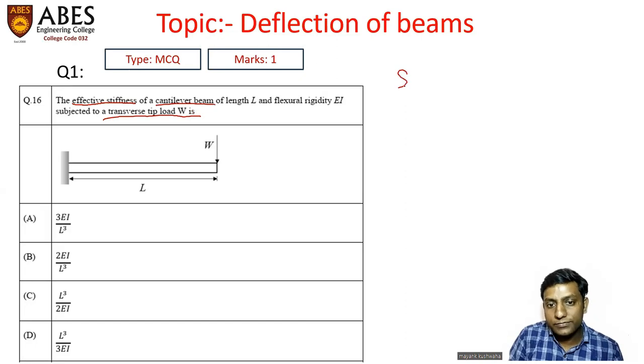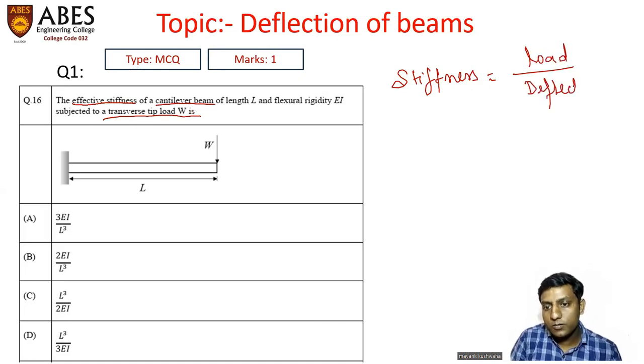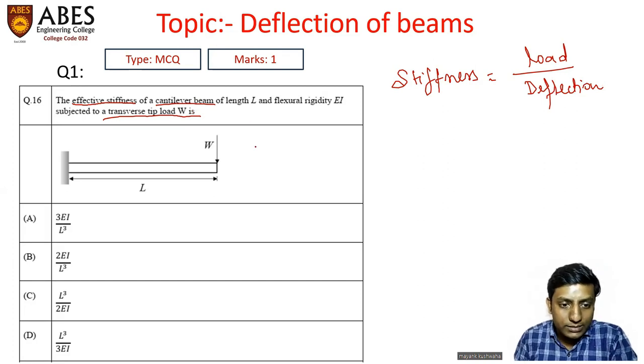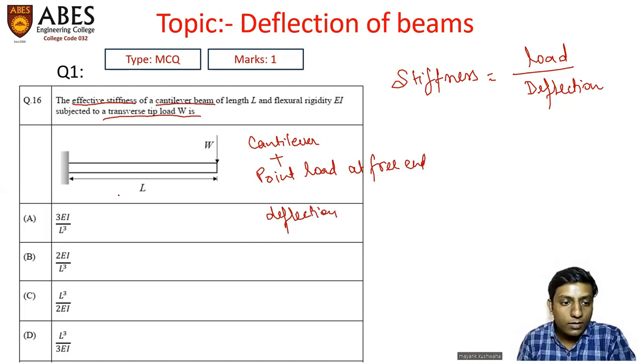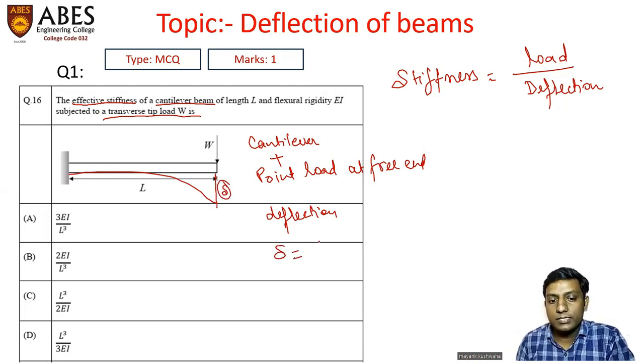As we all know, stiffness is defined as load per unit deflection. So it's a very easy numerical and obviously one mark question so it can be done very easily. We know that for a cantilever beam which is acted upon by a point load at free end, the total deflection at the free end delta is given as W L cube upon 3EI.